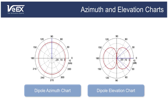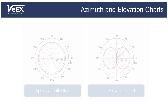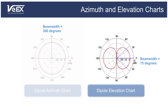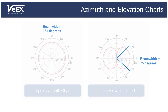Manufacturers also provide the antenna's beam width. The 3 dB beam width is the angle between the points in the main lobe that are down from the maximum gain by 3 dB, which equates to half the power. On our dipole elevation chart, the beam width is the angle between the two blue lines, which is about 75 degrees.